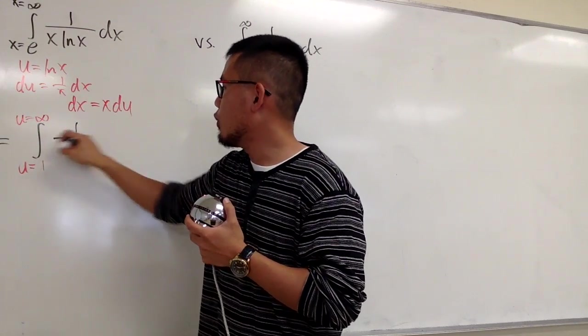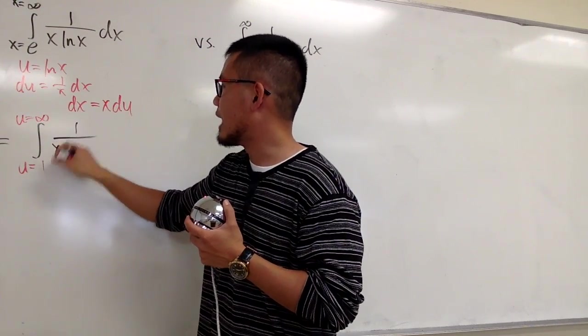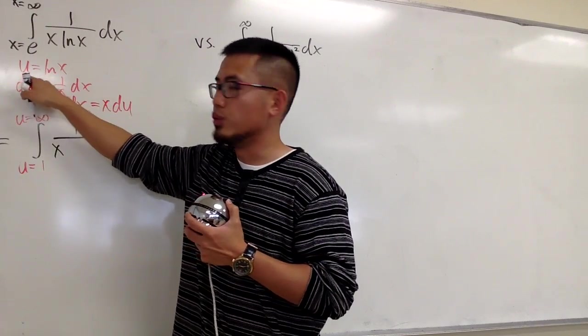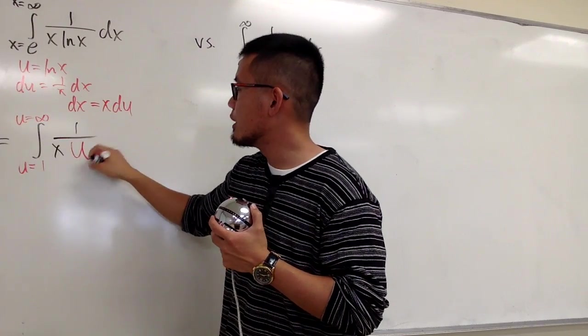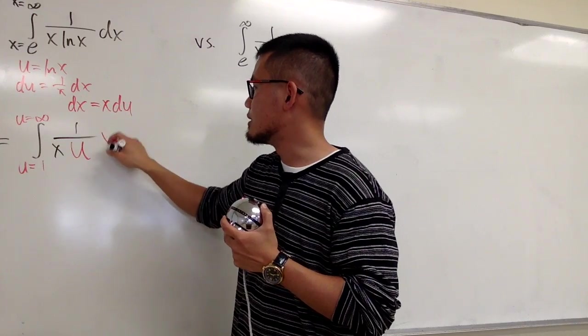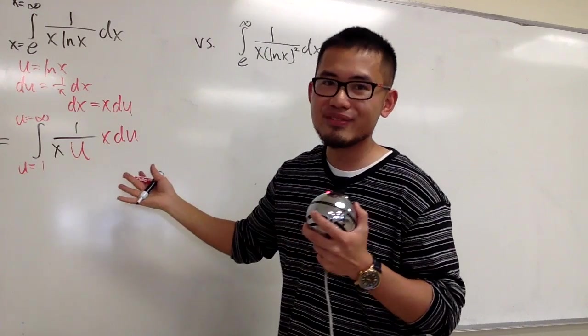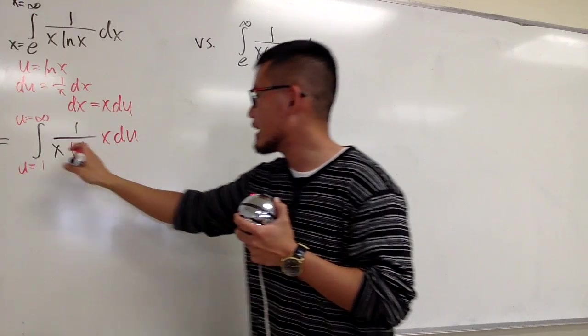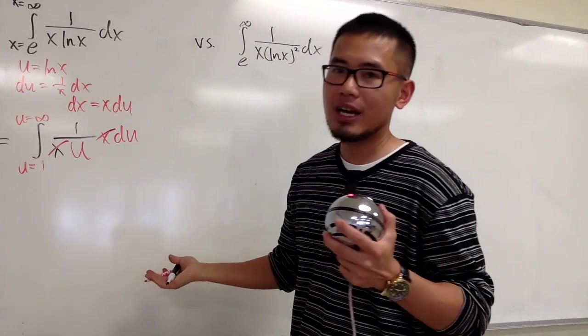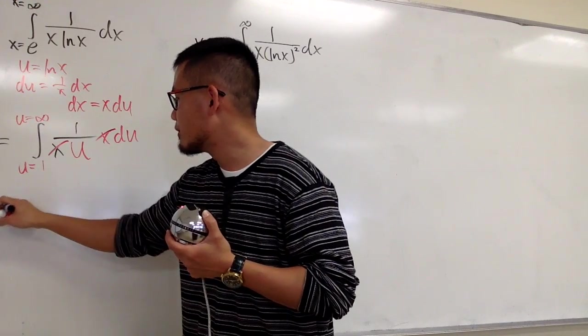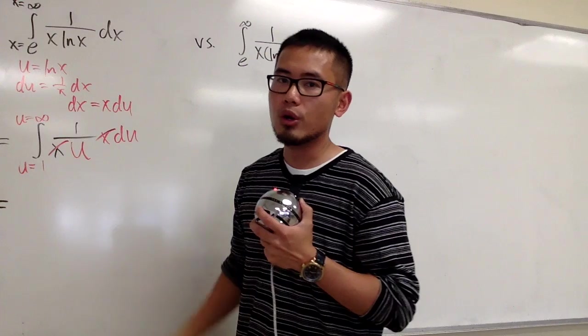And we have 1 over this x. Let me just put it down. And the ln(x) is u. And the dx is x du. So this is what we have. And now, you see that x and x cancel each other.